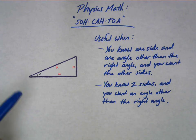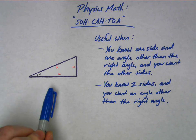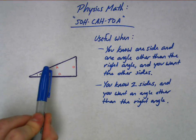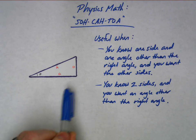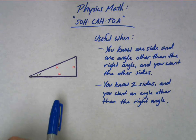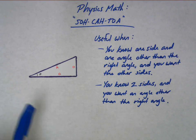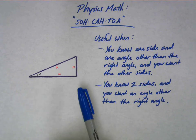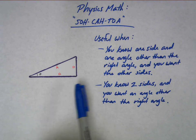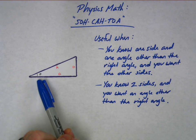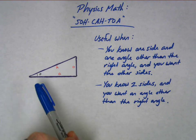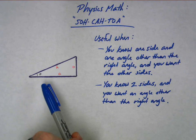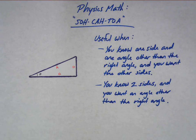Also, if you know two of the sides — any two of the sides, it doesn't matter which two — and you want to know one of the angles other than the right angle, so again here's your right angle and you want to know the other angle, then these functions can also be useful to you.